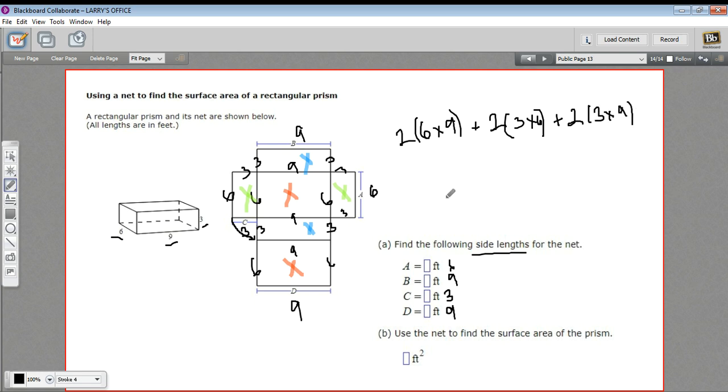And then this is really just a problem of some multiplication and addition. So six times nine is 54, times two is 108. Three times six is 18, times two is 36. And three times nine is 27, times two is 54. So we'll add 54 and 36 and 108, and we get 198.